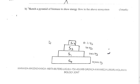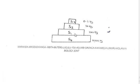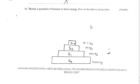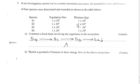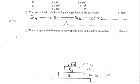Part B: Sketch a pyramid of biomass to show energy flow. The bars must have the same width but length varies with biomass. S4 has the highest biomass at 10,000 kg (1×10⁴), followed by S1 at 1,000 kg (1×10³), then S3 at 10 kg (10¹), then S2 at 0.1 kg (10⁻¹).